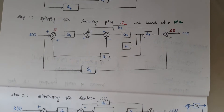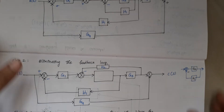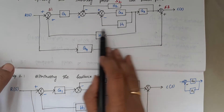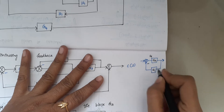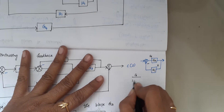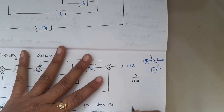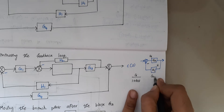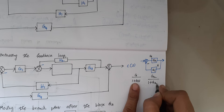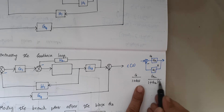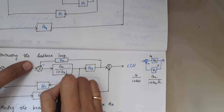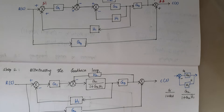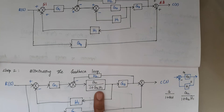Step 2 is eliminating the feedback loop. Here the feed-forward element and feedback are clear, and the type of feedback is negative. Using the basic formula G/(1+GH): in the place of G we have G2, and in the place of H we have H1. So the result is G2 divided by 1 plus G2*H1. This eliminates the feedback loop.